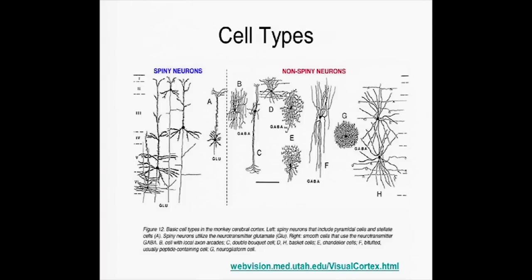Here are examples of different cell types by anatomy: spiny cells, non-spiny cells, and the different morphology. These are all Golgi stains.